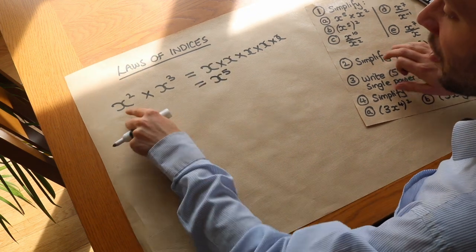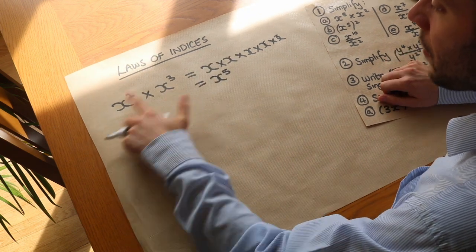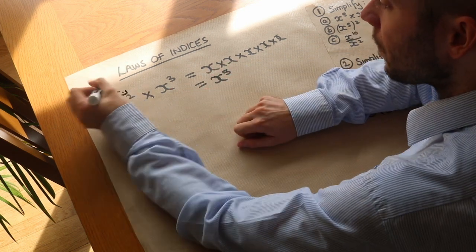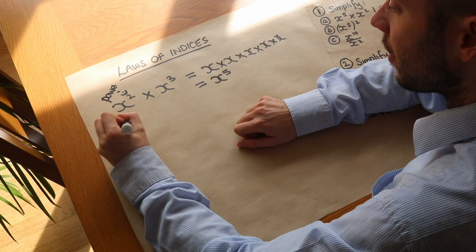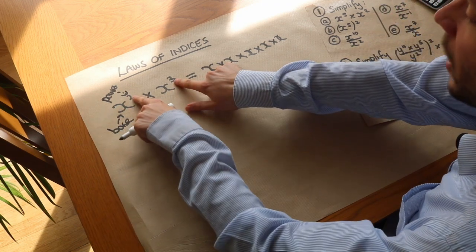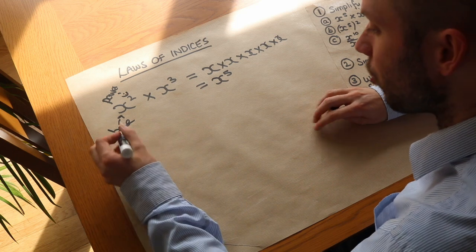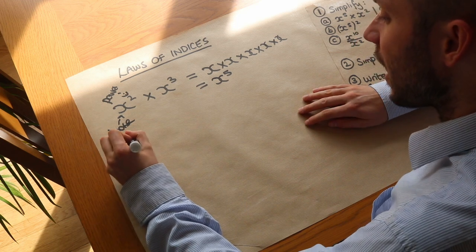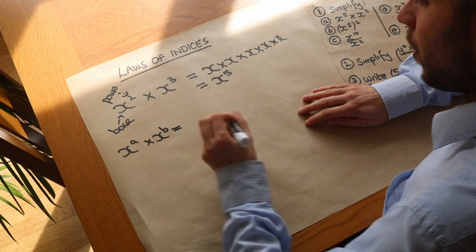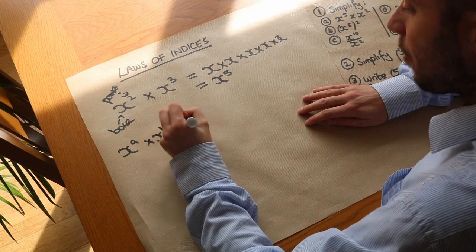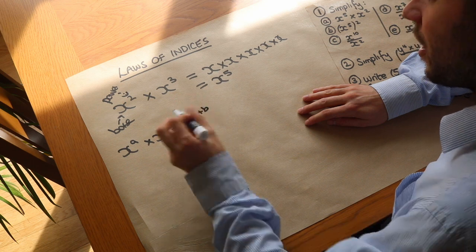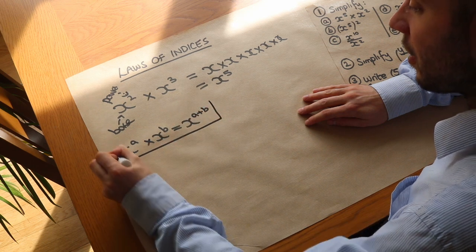So it seems that when we multiply two things together and we have the same base — we call this the power and we call this the base, the number at the bottom — we end up adding the powers. So in general if we had x to the power of a times x to the power of b we would get x to the power of a plus b. That's our first law of indices.